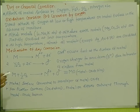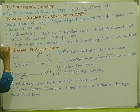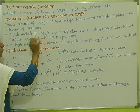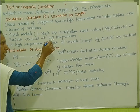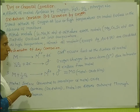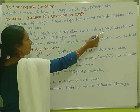So what metals are affected? Alkaline metals and alkaline earth metals. Alkaline earth metals include magnesium and calcium.